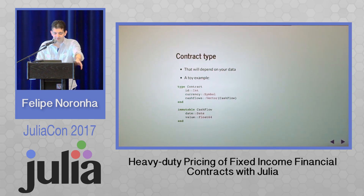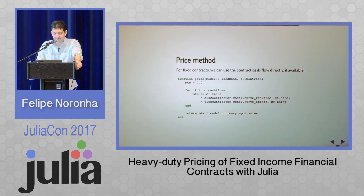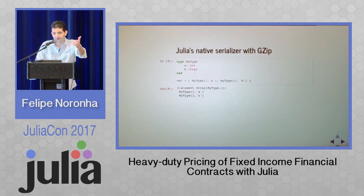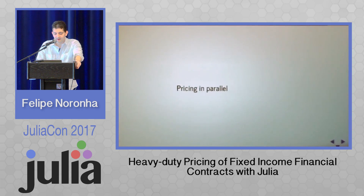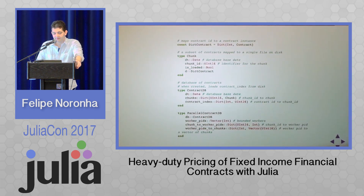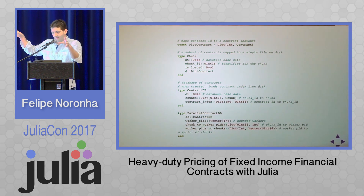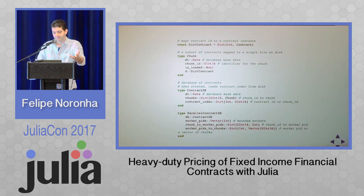The contract type is specific to my problem so I won't go into it. The pricing method for a fixed income contract is very straightforward, and it's interesting to see how few lines of code it takes. I use the Julia native serializer with JlZip. For parallel pricing, I divided the database into different chunks — each process prices only the chunks allocated to it. That's how I do the parallel computation. It's very straightforward.